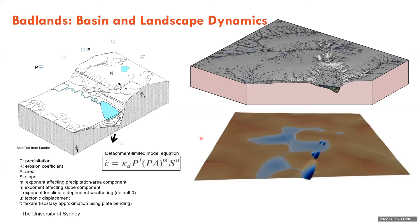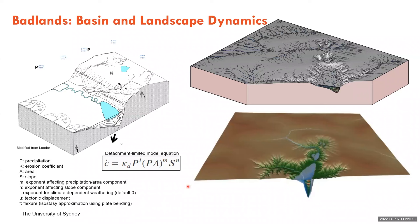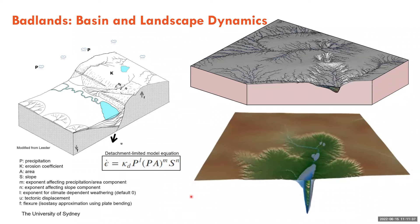Badlands is a source-to-sink landscape evolution model implemented in Python. It uses empirical equations to calculate the change in height of the slope on each part of a surface representing a landscape. Importantly, Badlands doesn't model sediment transport using grain size or lithology properties — it just changes the shape of that surface using these equations, which are based on observations and real-world experiments. Rainfall, drainage patterns, and the volume of surface material transported along various pathways are what Badlands keeps track of.